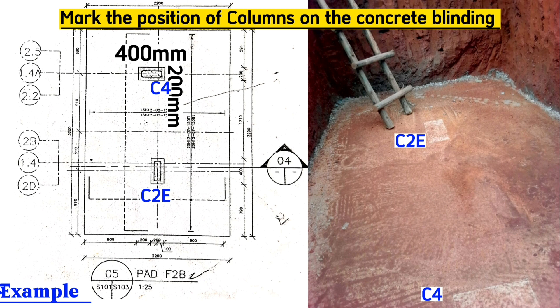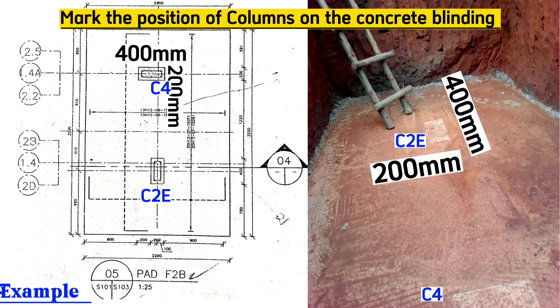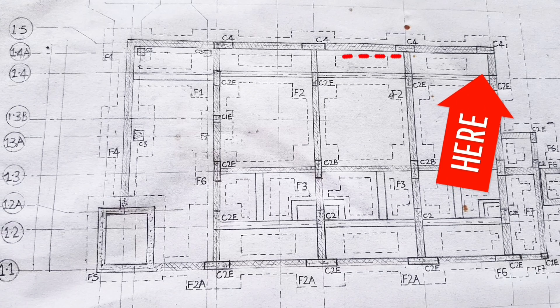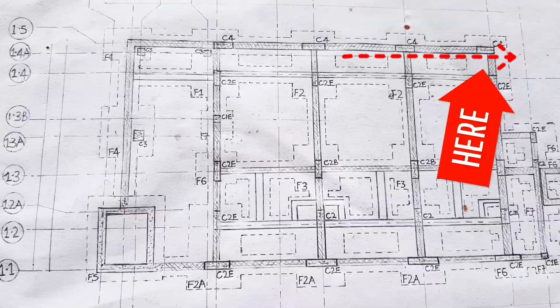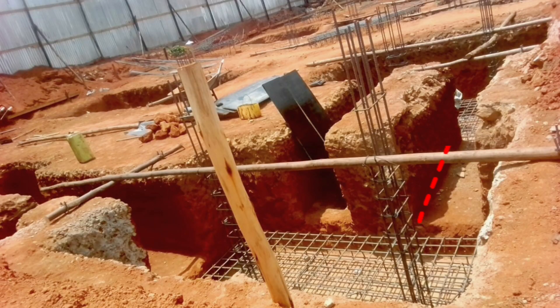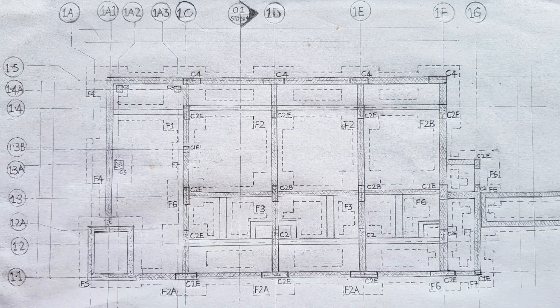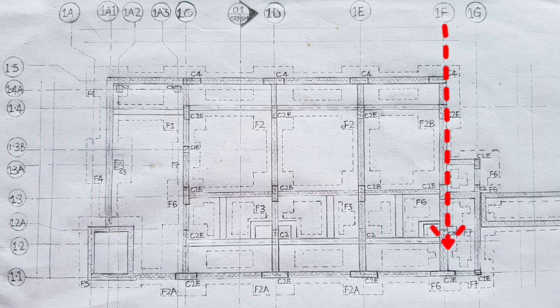This is 400 millimeters along the length and this is 200 millimeters along here. Grid line 1.4A passes along here. Also grid line 1.4A passes along here. Grid line 1F passes here. Grid line 1F passes also here.